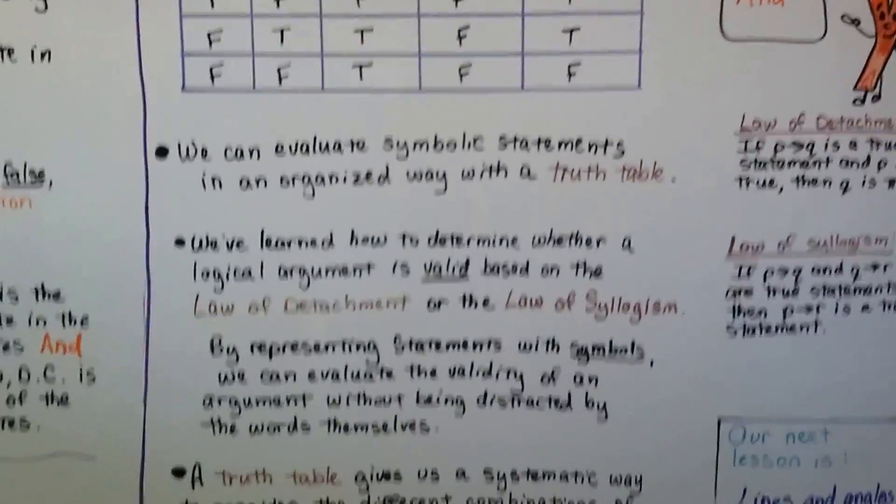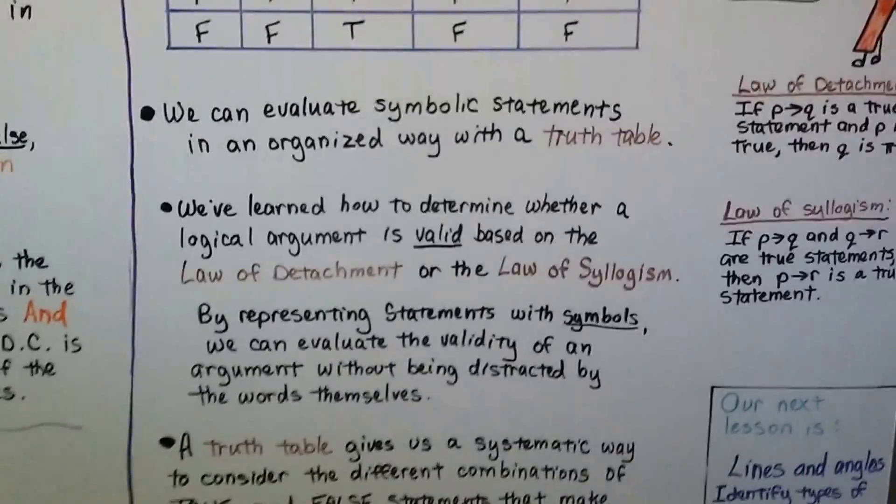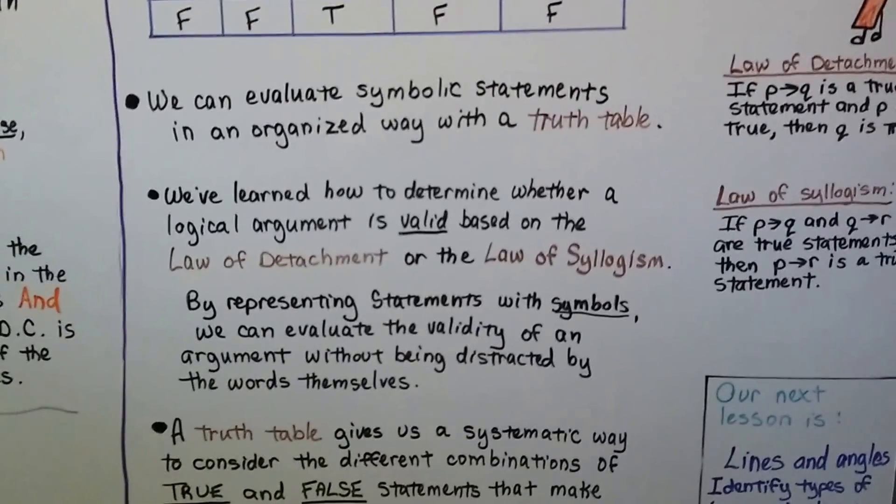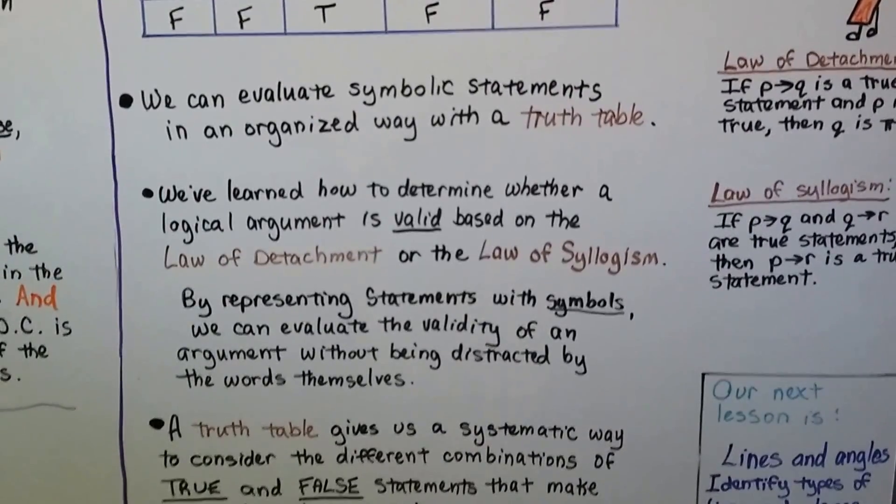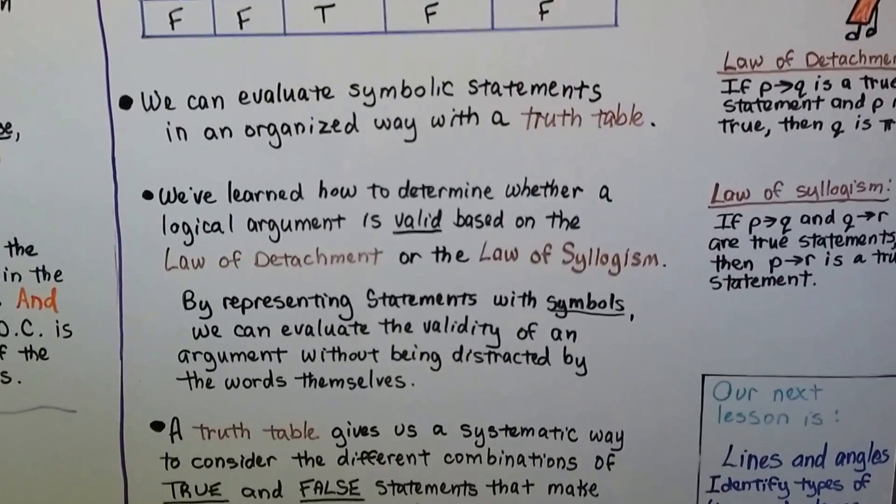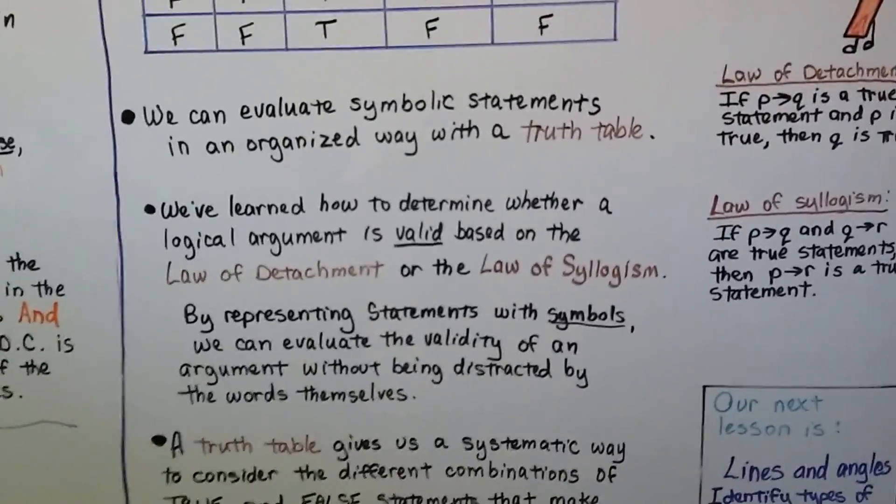We can evaluate symbolic statements in an organized way with a truth table. We've learned how to determine whether a logical argument is valid based on the law of detachment or the law of syllogism. We did that in an earlier video.